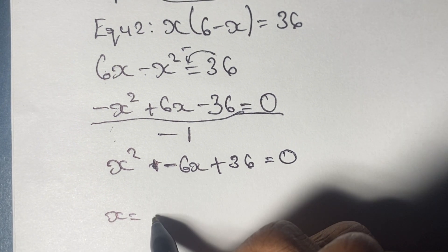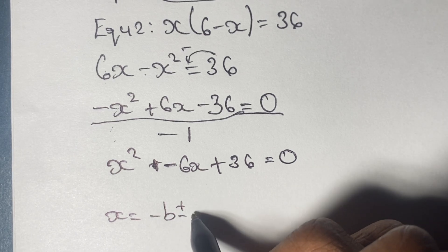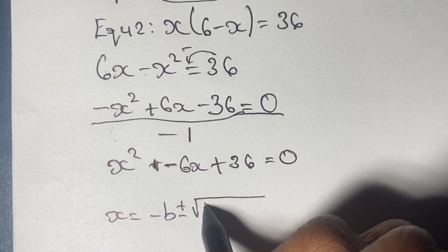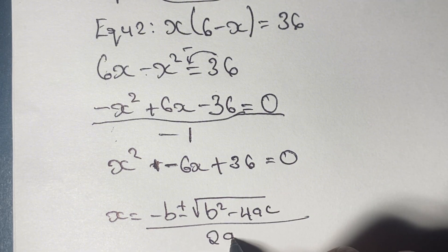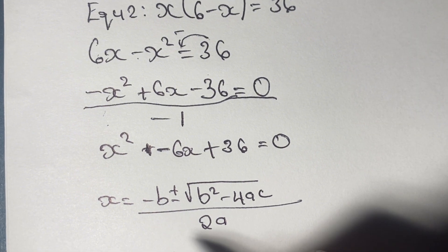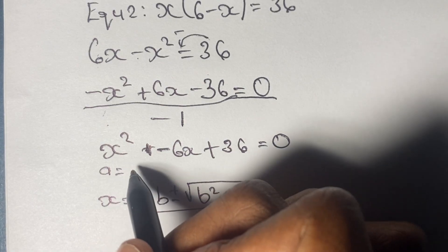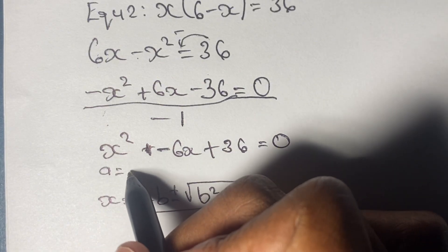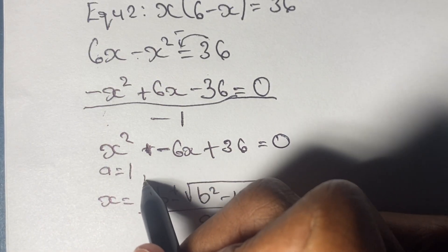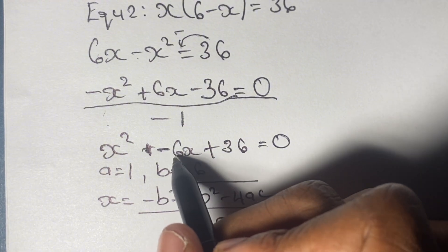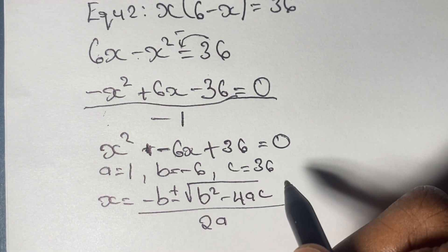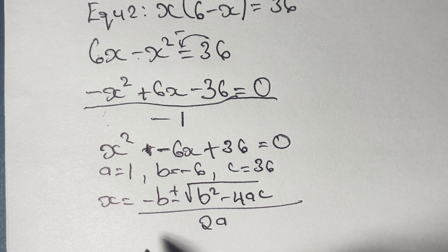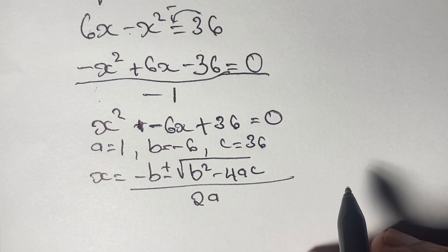Then we find the value of x using our quadratic formula, where x is equal to negative b plus or minus the square root of b squared minus 4ac, all over 2a. In this case, a is equal to positive 1, b is equal to negative 6, and c, the constant term, is 36. So all we have to do is plug in the values of a, b, and c into our formula.